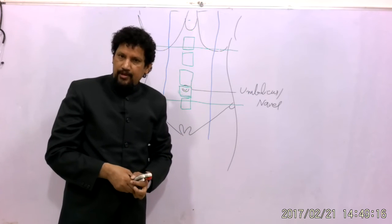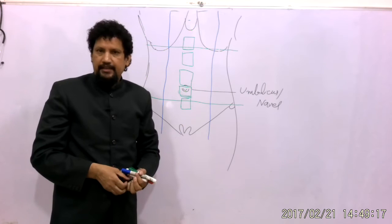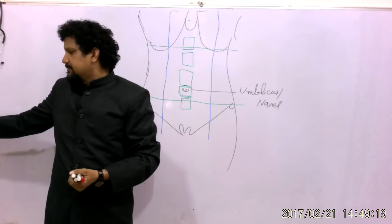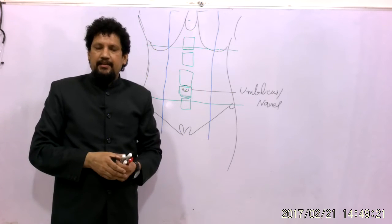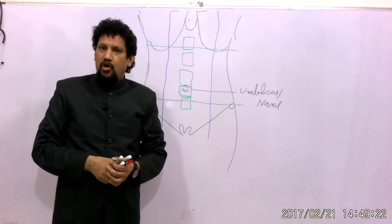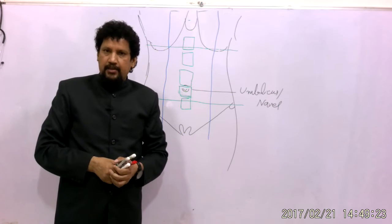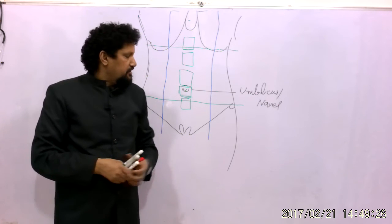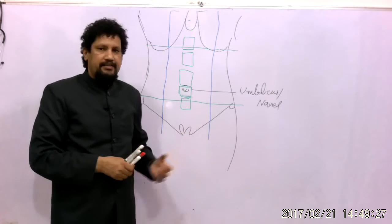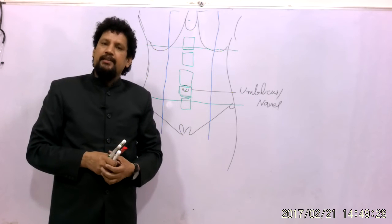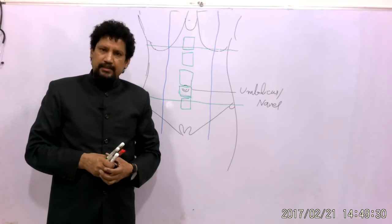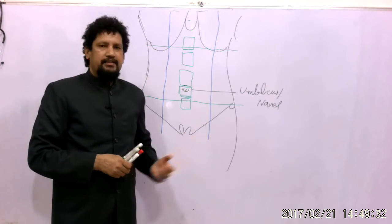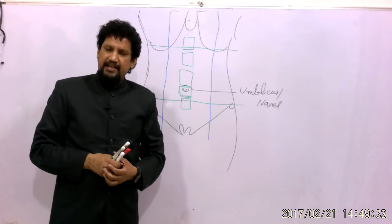The abdominal wall is divided into nine imaginary planes or regions to describe the underlying viscera, their positions and relations, as well as the relations of the peritoneum.